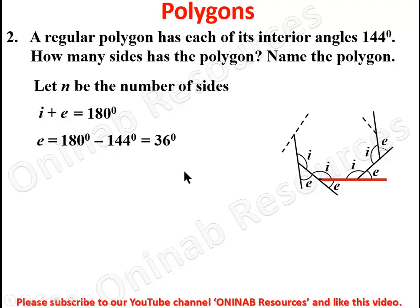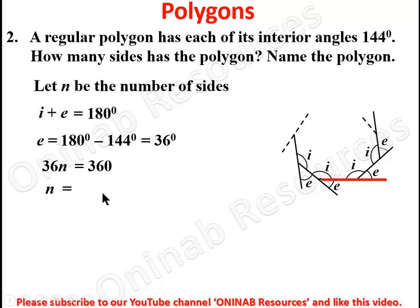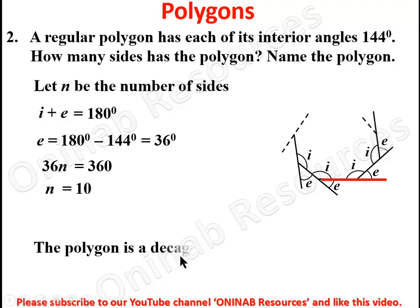The sum of exterior angles of any polygon is always 360 degrees, whether it has 3 sides, 4 sides, or more. Since this polygon is regular, we have 36n equal to 360 degrees. Dividing both sides by 36, n is equal to 10. The polygon has 10 sides — it is a decagon.